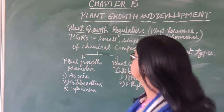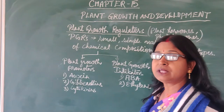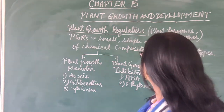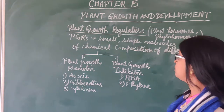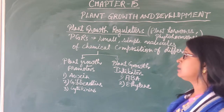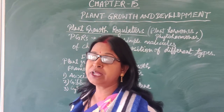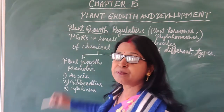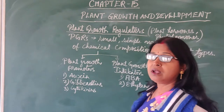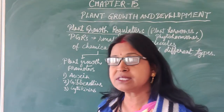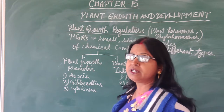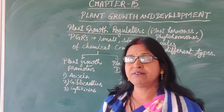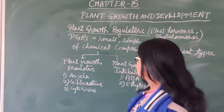Today we start Chapter 15: Plant Growth and Development. In this chapter we will study plant growth regulators, also known as plant hormones or phytohormones, because they control all the activities in the plant — both promoting and inhibiting activities. These are small chemical substances present in small amounts, with varying compositions, and they control various activities like growth, development, flowering, fruiting, etc.